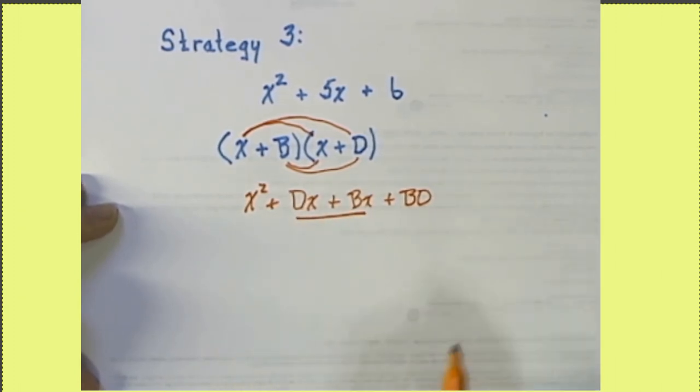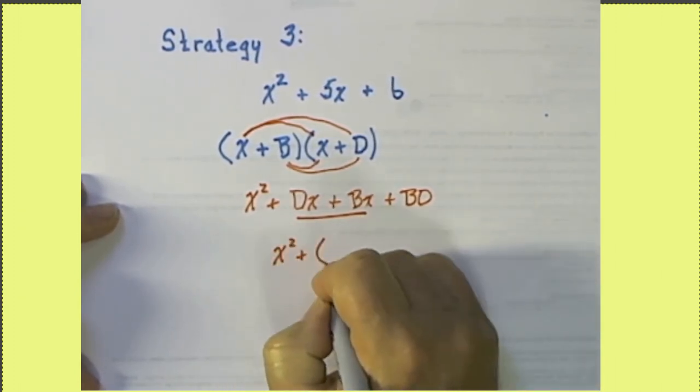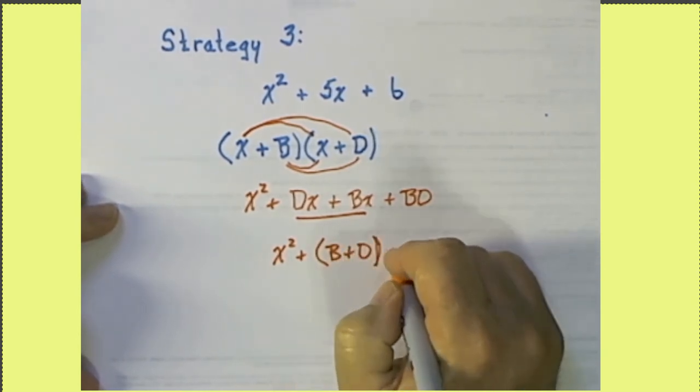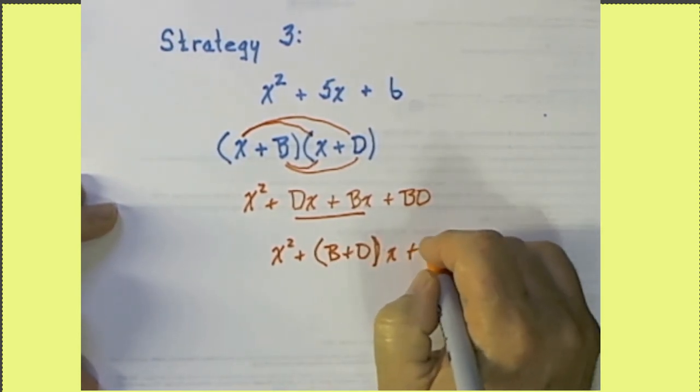We know how to multiply these out. This is going to give us x squared plus AD x plus BC x plus BD. Then these two like terms add up, I'm going to write those in alphabetical order, B plus D times x plus BD.